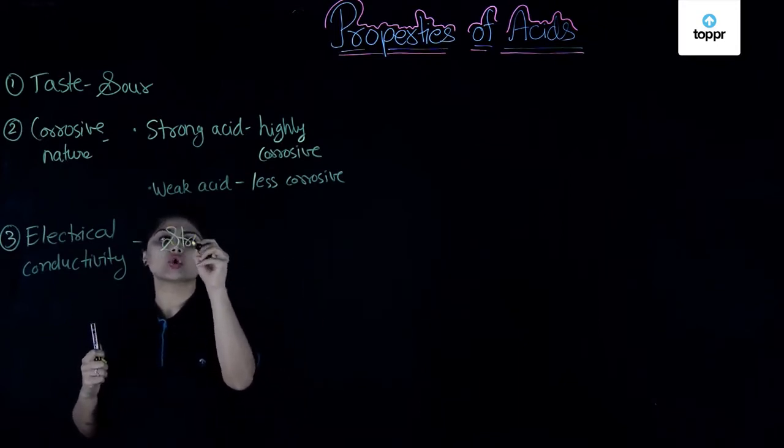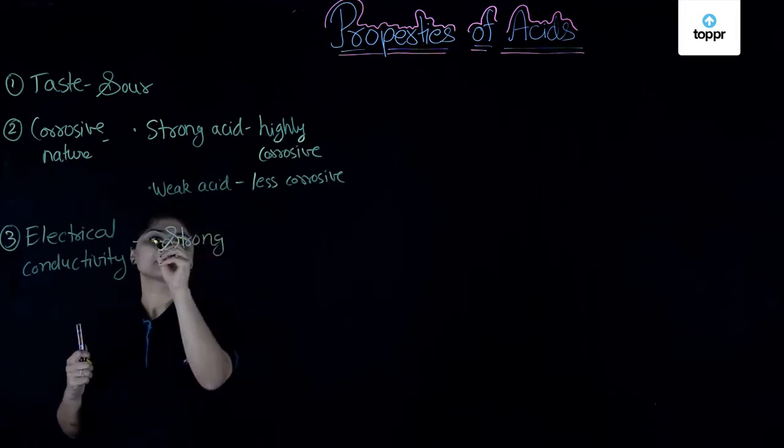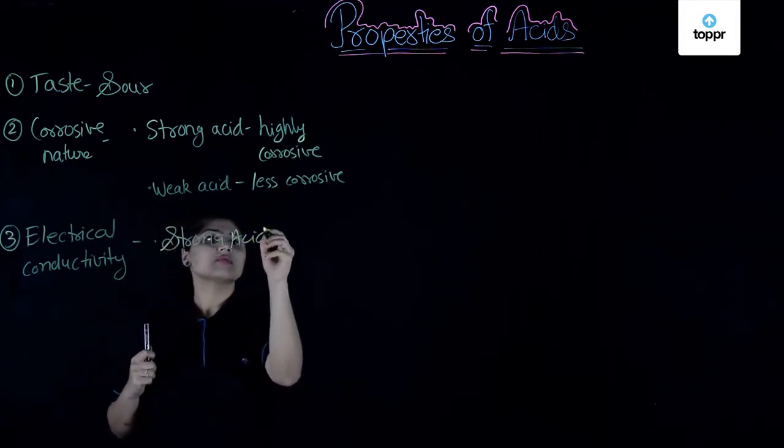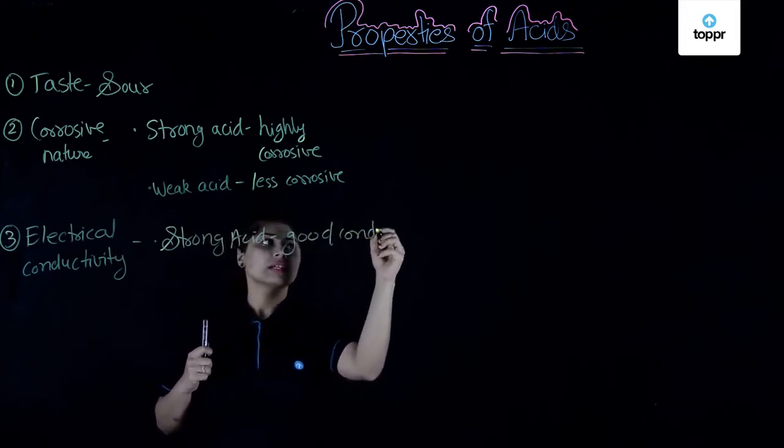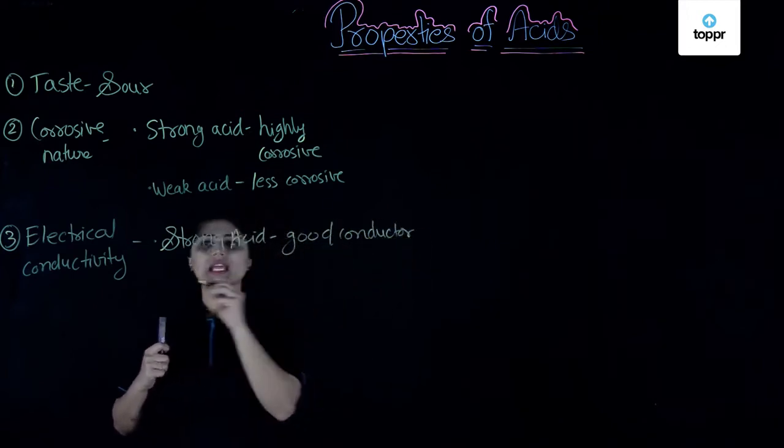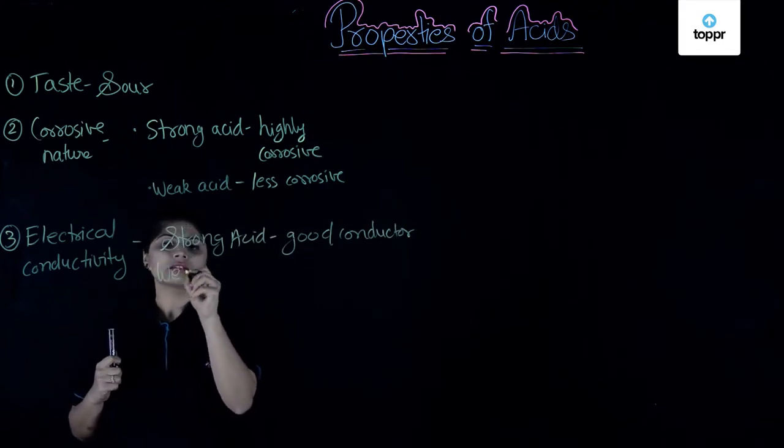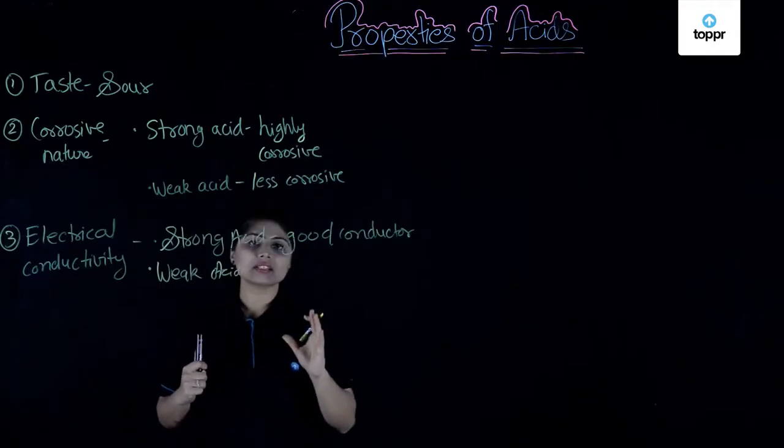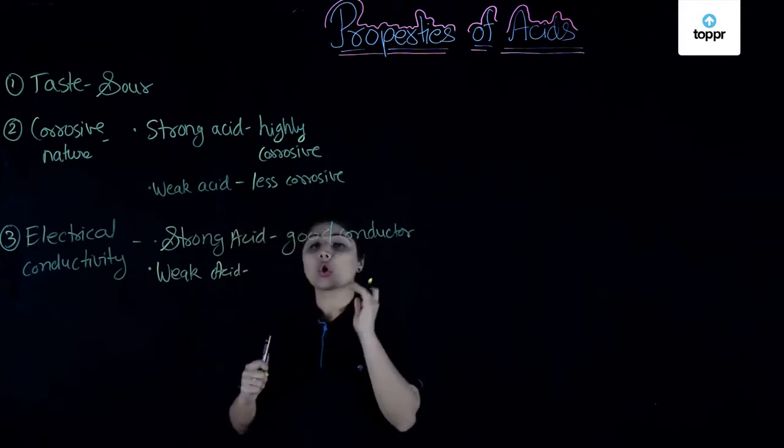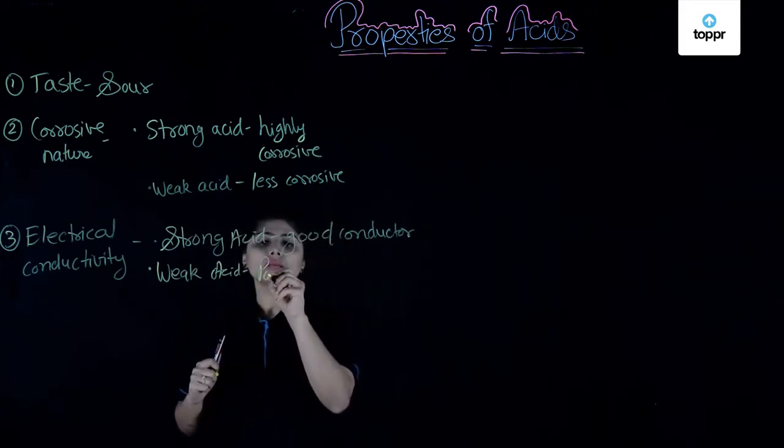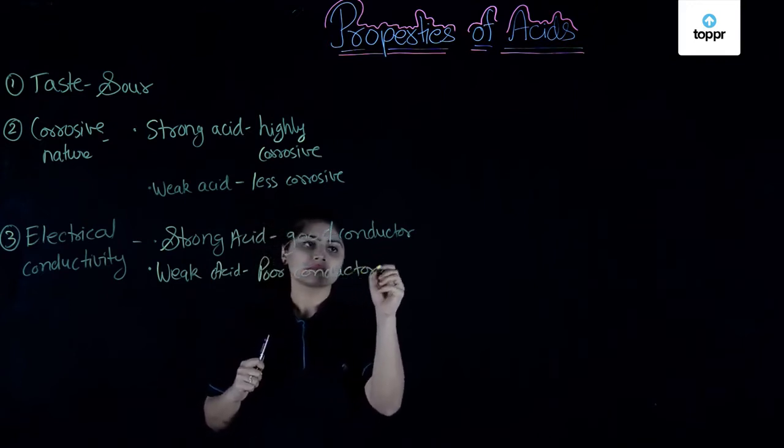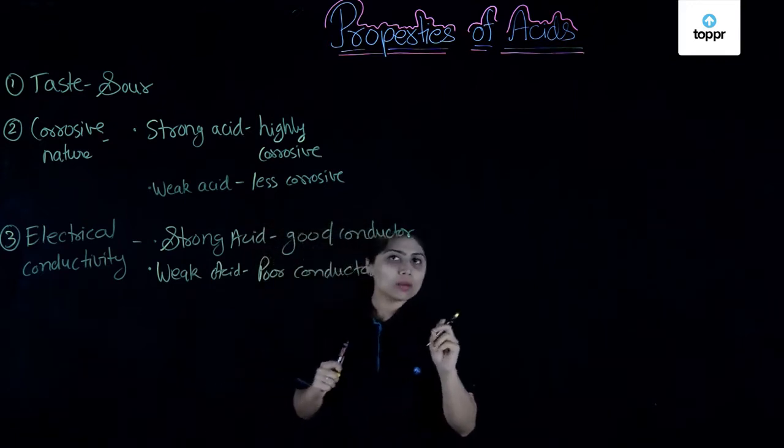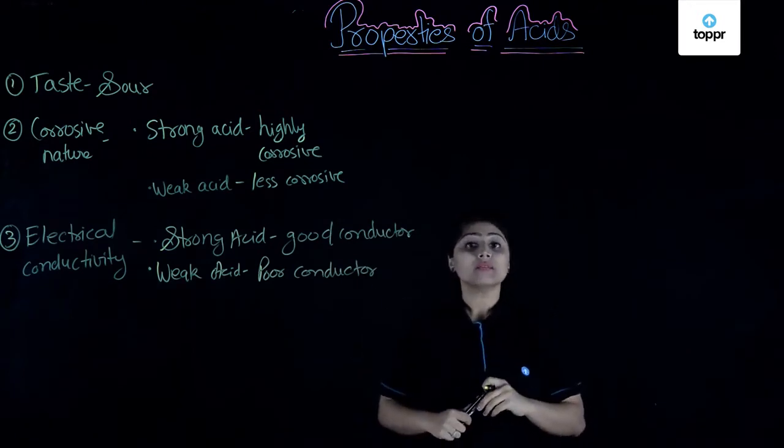If the acid is a strong acid, then it will be a good conductor of electricity. And if it is a weak acid, it will conduct electricity but not as much as strong acid can do. So, it is a poor conductor of electricity. A very small amount of current can flow through weak acids.